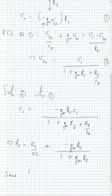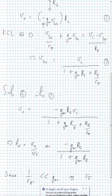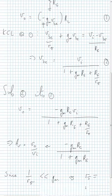This approximation holds since 1/Rpi is very much less than Gm, as Rpi is defined as beta over Gm.